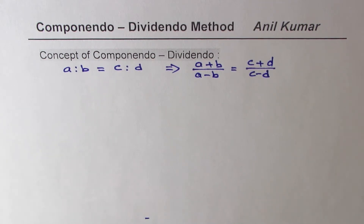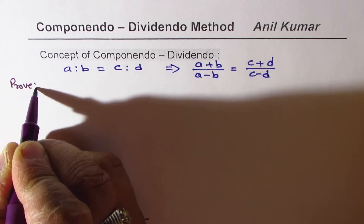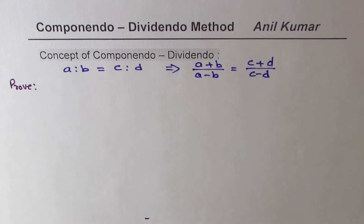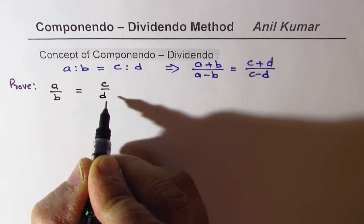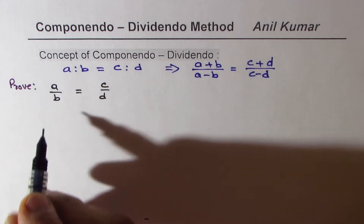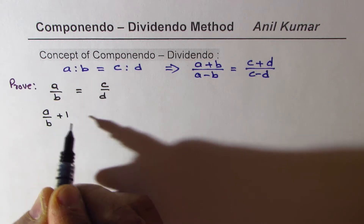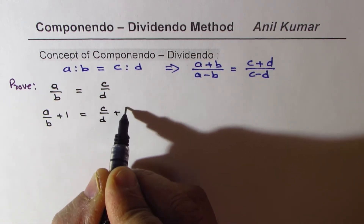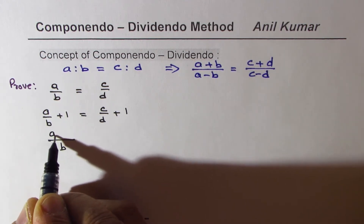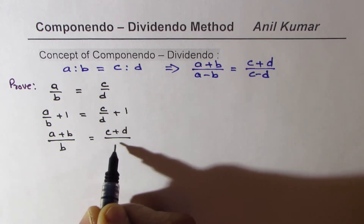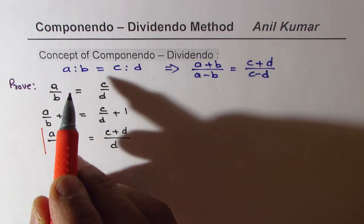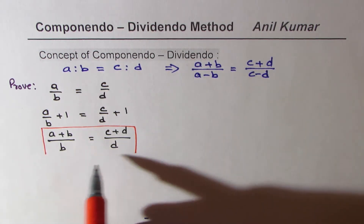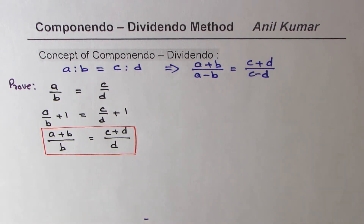Let's take up the proof first. When I write A is to B equals to C is to D, then in ratios I could always write this as A over B equals to C over D. Now if I add 1 on both sides — that is to say A over B plus 1 equals to C over D plus 1 — taking common denominators we get B here and A plus B in the numerator, and C plus D over D on the right. So we get the result: if A is to B equals to C is to D, then A plus B over B is also equal to C plus D over D.